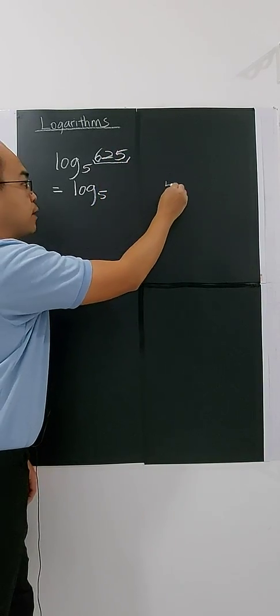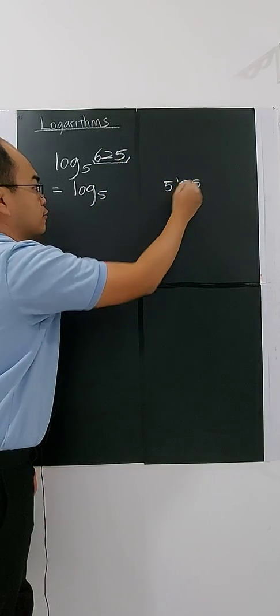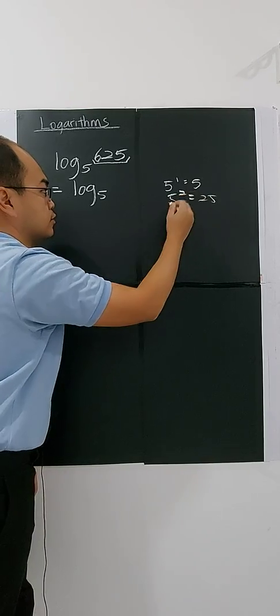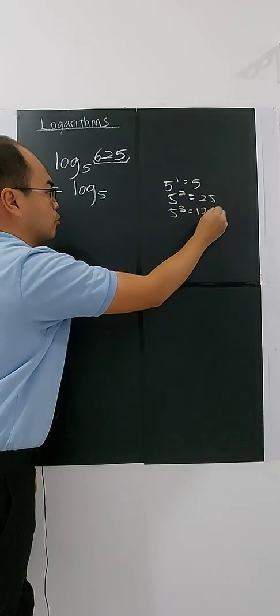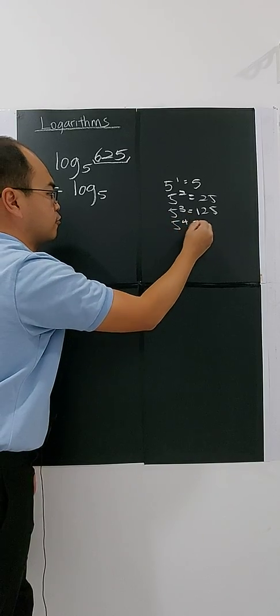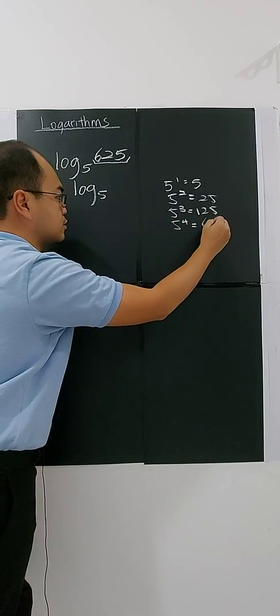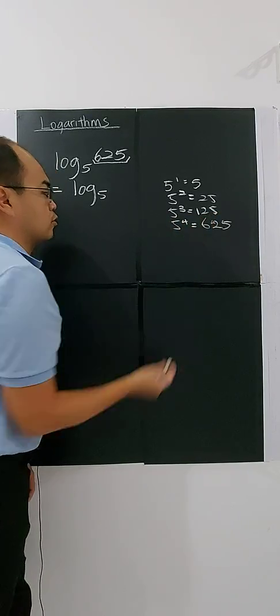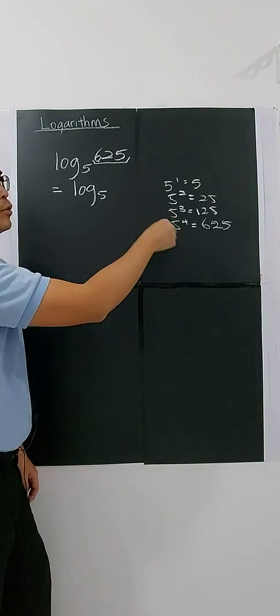5 power of 1 is 5, 5 power of 2 is 25, 5 power of 3 is 125, 5 power of 4 you will get 625. I think you know that.